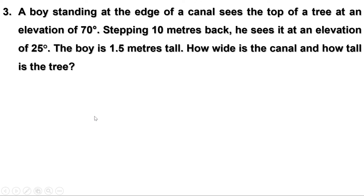Third problem. A boy standing at the edge of a canal sees the top of a tree at an elevation of 70 degrees. Stepping 10 meters back, he sees it at an elevation of 25 degrees. The boy is 1.5 meters tall. How wide is the canal and how tall is the tree? There is a canal, and on one side there is a tree and on the other side there is a boy. His height is 1.5 meters. He sees the top of the tree at an elevation of 70 degrees. Then he moves 10 meters backwards. From there, he sees the top of the tree at an elevation of 25 degrees. We have to find the width of the canal and height of the tree.